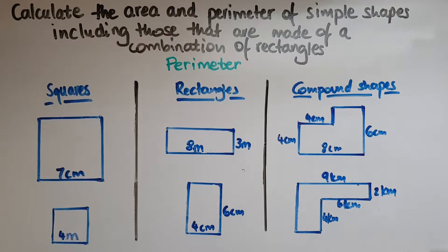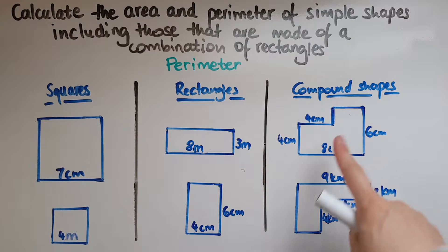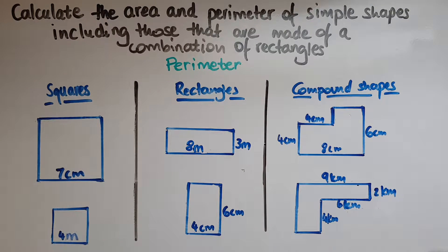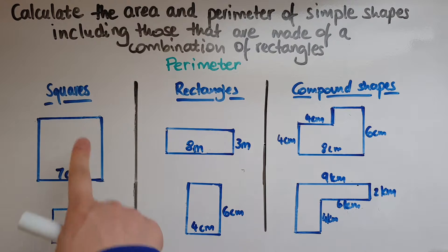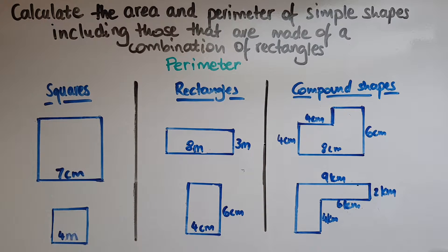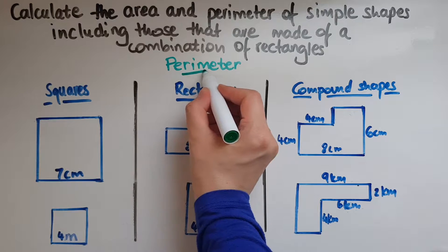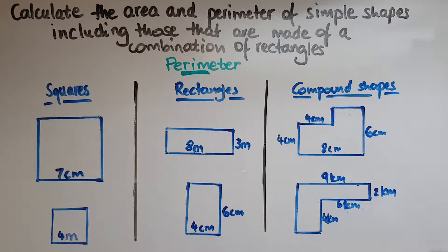In this video we'll learn to calculate the area and perimeter of simple shapes, including those made of a combination of rectangles, which I call compound shapes. We'll start with the perimeter. The perimeter is measuring the length around the shape — go around and add all the sides up. For example, if this is the plan of a room and you want to put the skirting board around it, you measure those lengths and add them up. A clue is within the word perimeter: 'rim' — the rim of the room going around.